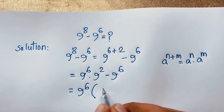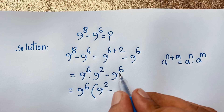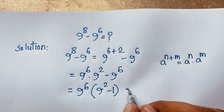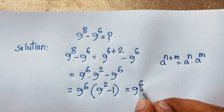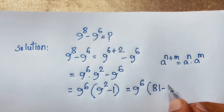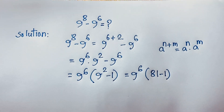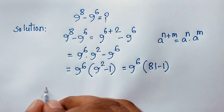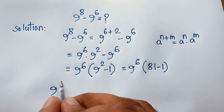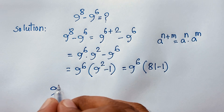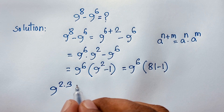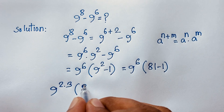Factoring out 9 to the power 6, we get 9 to the power 6 times (9 to the power 2 minus 1). Now 9 to the power 2 is 81, so we have 9 to the power 6 times (81 minus 1), which equals 9 to the power 6 times 80. We can also write 9 to the power 6 as 9 to the power 2 times 3.